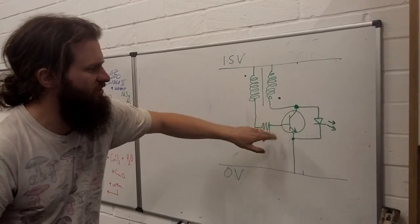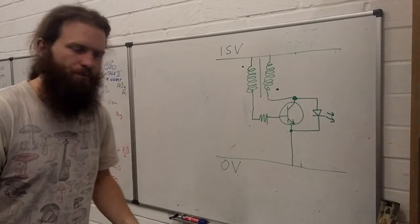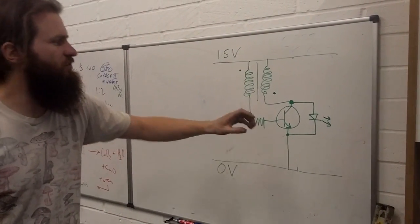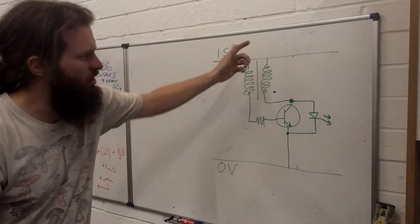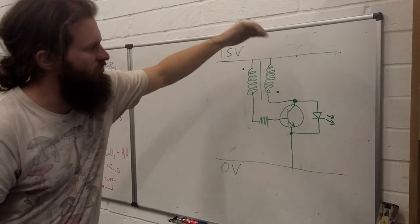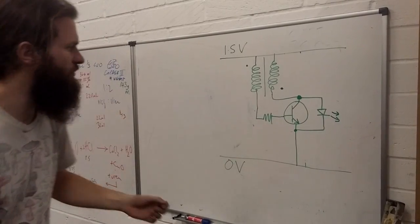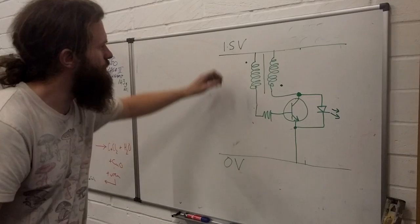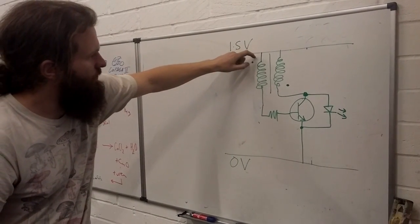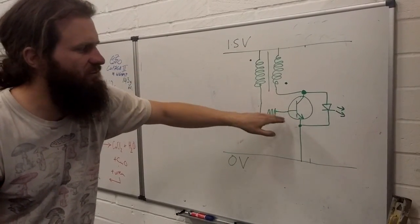Down here we have our transistor and we've got the light-emitting diode here. So how does this work? Now what we need to do is switch on and off this coil very quickly so that it causes an electromotive force to turn this LED on and off quick enough that it looks like it's on. So what happens? When we turn this rail on, this 1.5 volt rail, current flows through this coil, through the resistor, and into the base of the transistor. This starts turning the transistor on.